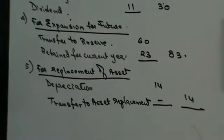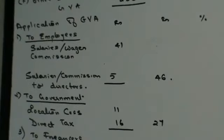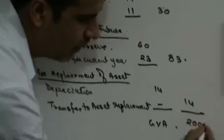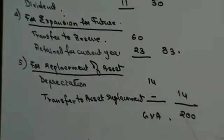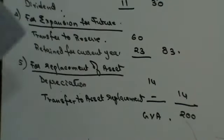Adding all this gives my GVA = 200. That should always confirm your answer. This is your reconciliation of GVA. Right in the beginning of the sum I told you to show the reconciliation between GVA and profit before tax — I have done my reconciliation of GVA and profit before tax.